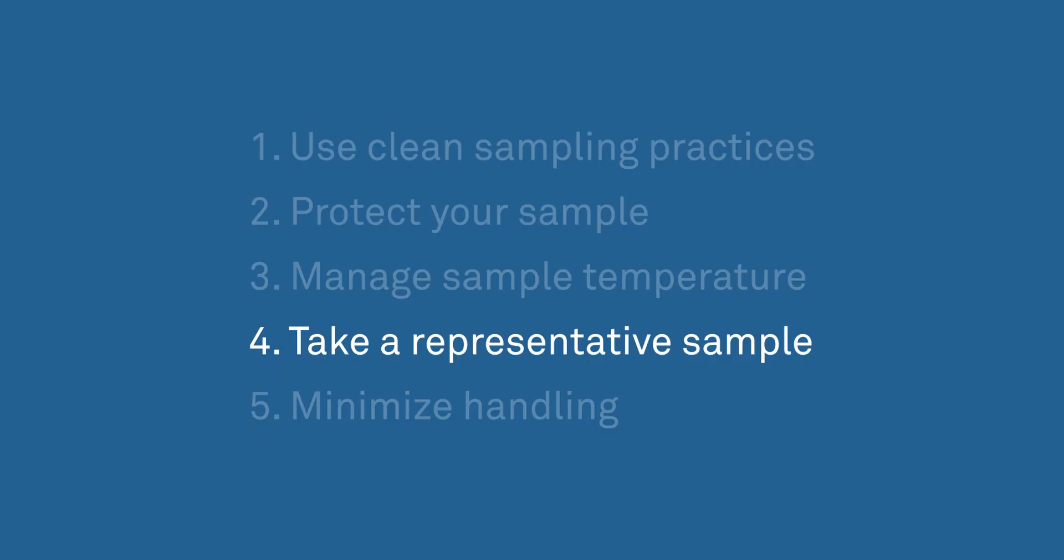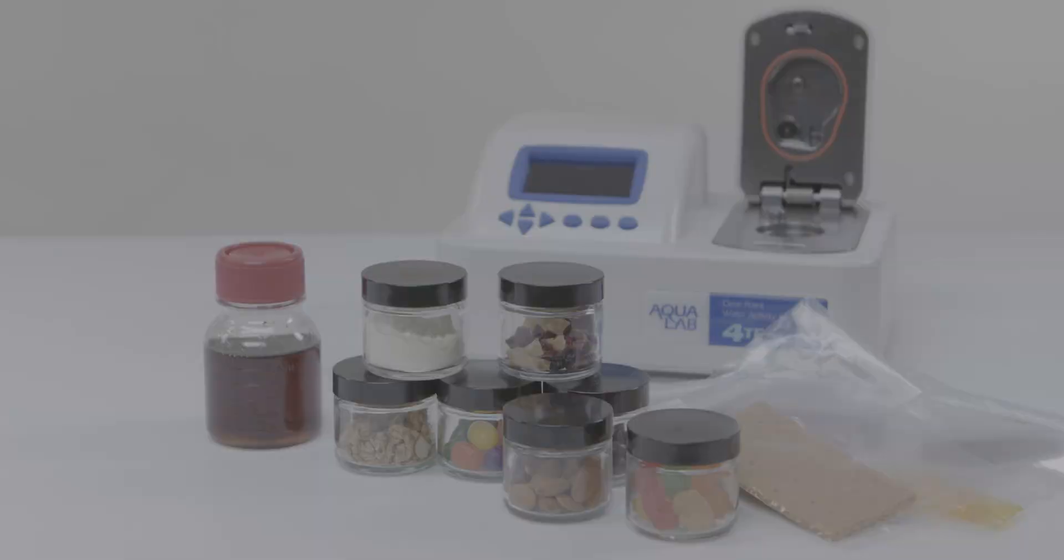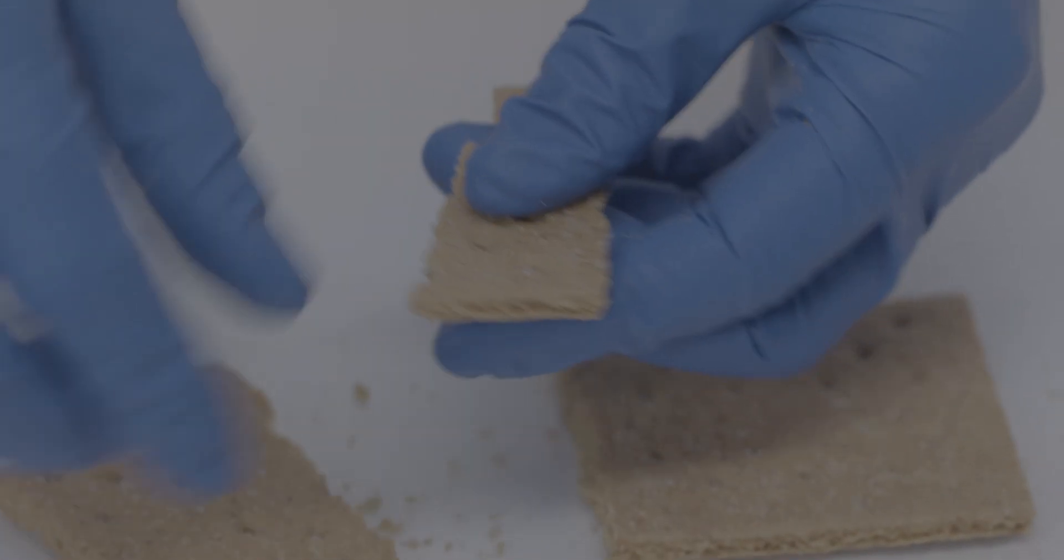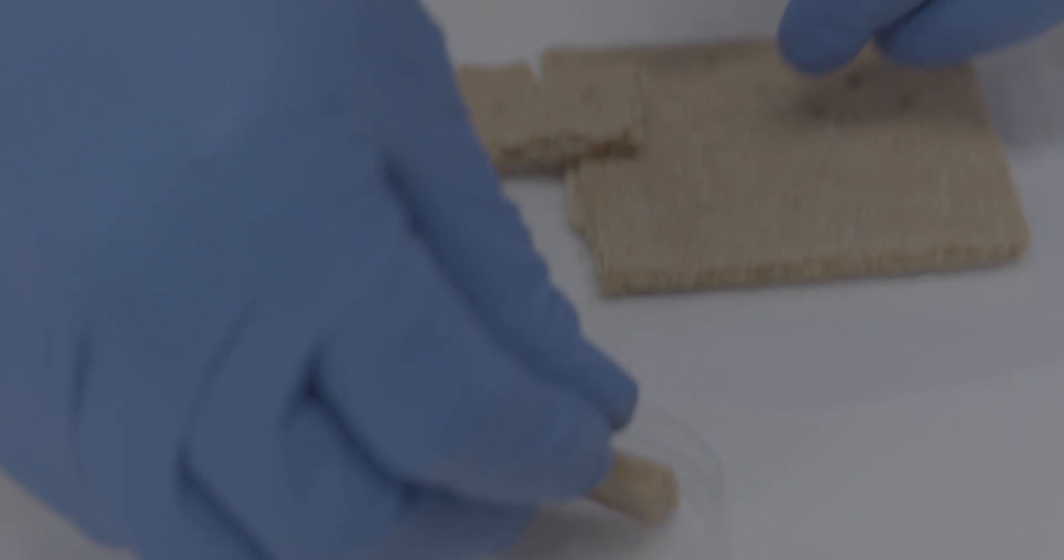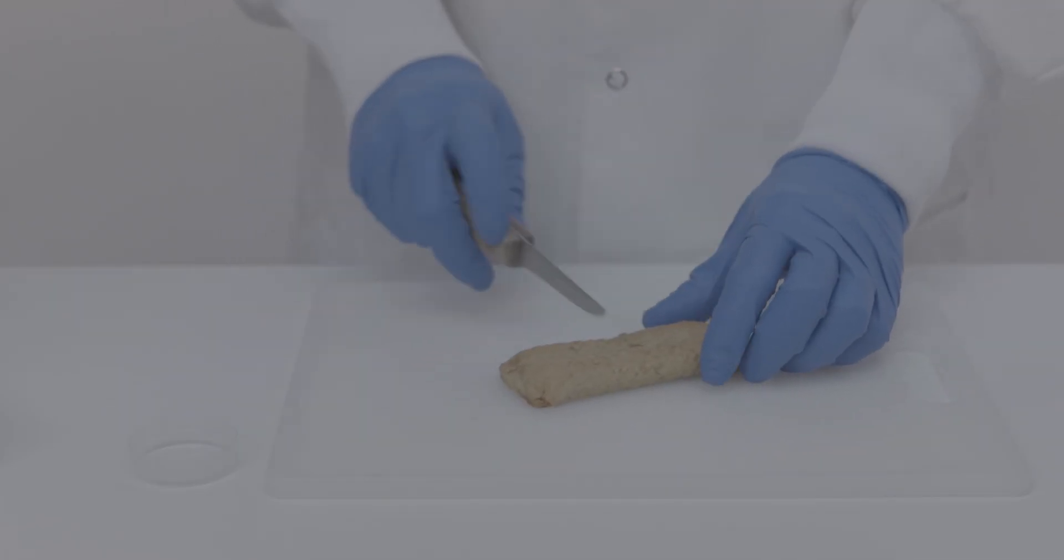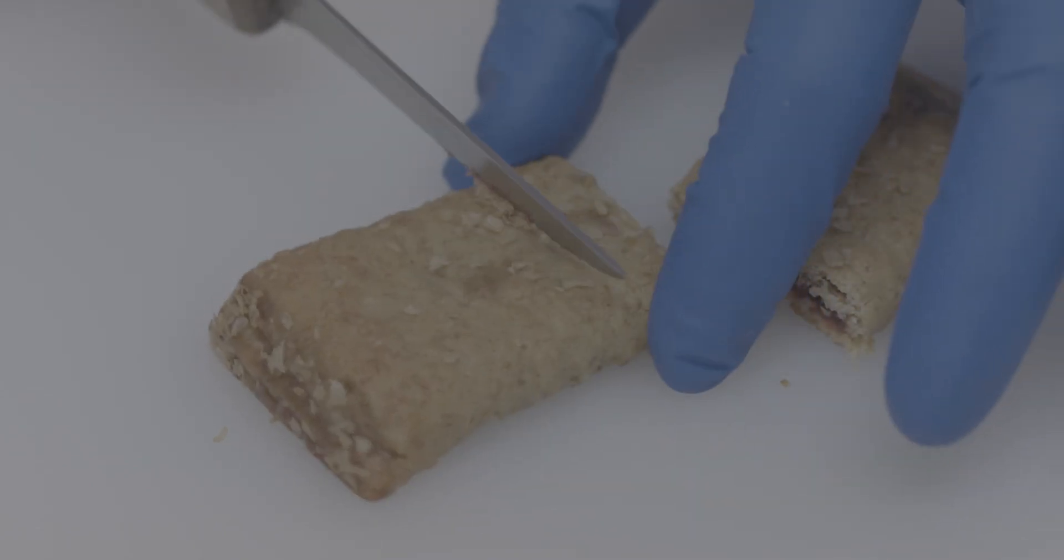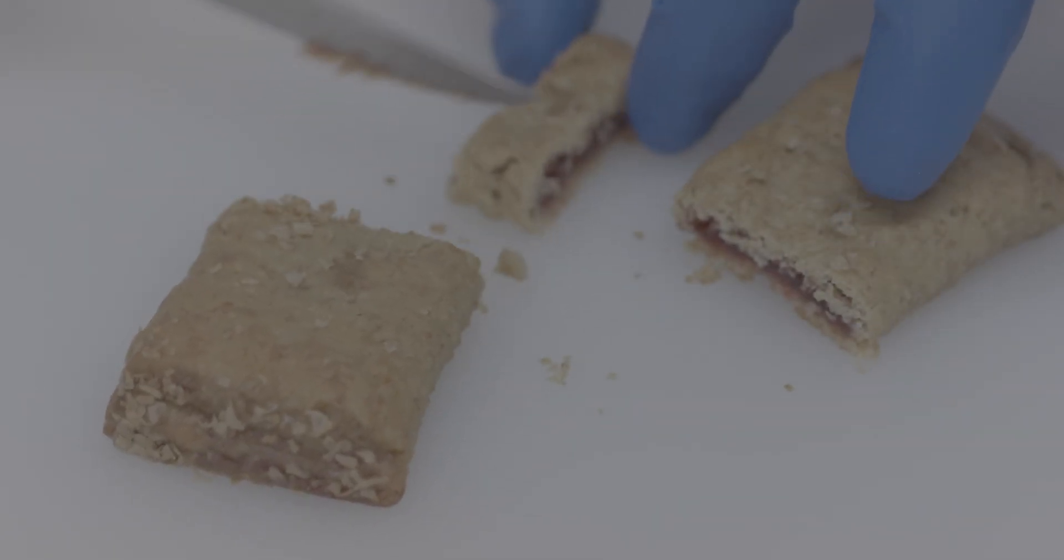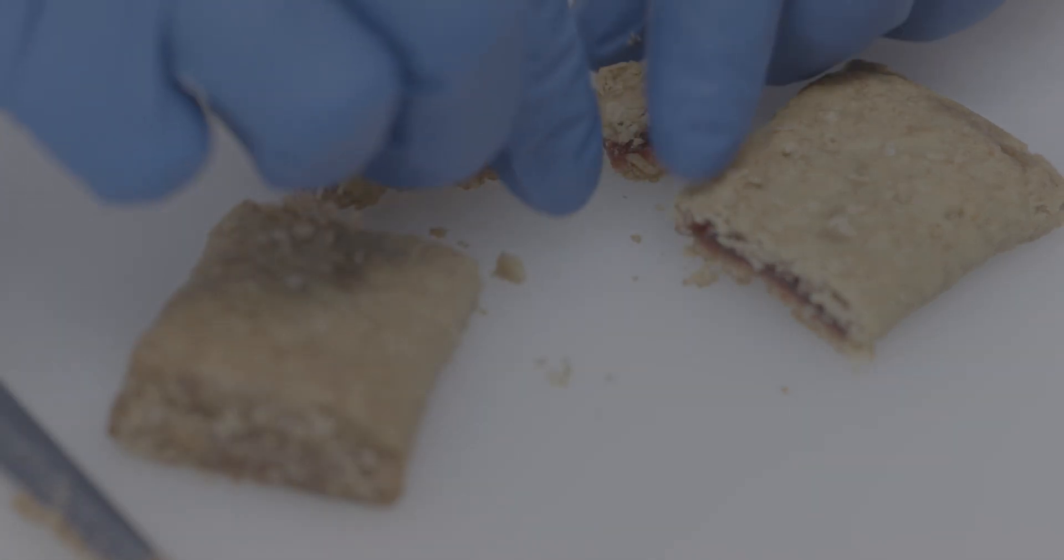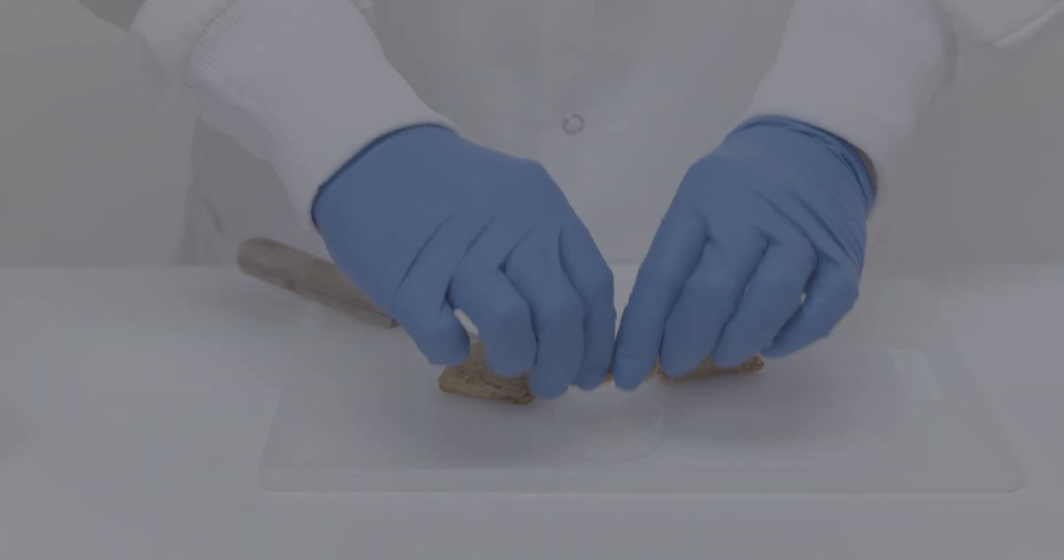Four, take a representative sample. Whatever you put in the cup should be as close as possible to what the consumer takes out of the package. If the product won't fit, break it to fit, while minimizing handling. If it's a multi-component product like filled cake, cheese and crackers, or cereal with fruit, get a representative sample. By representative, we mean that all the components of the product should be represented in the same ratio as they are in the actual product.